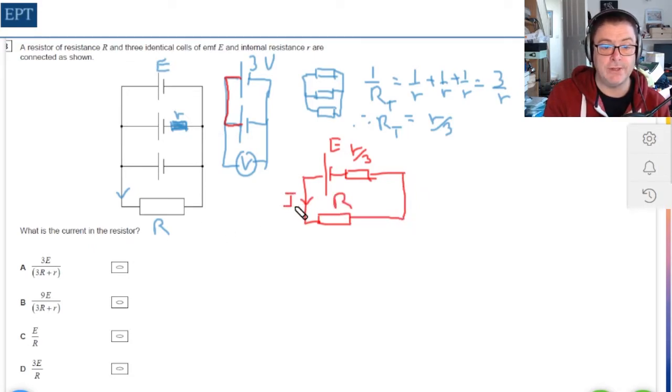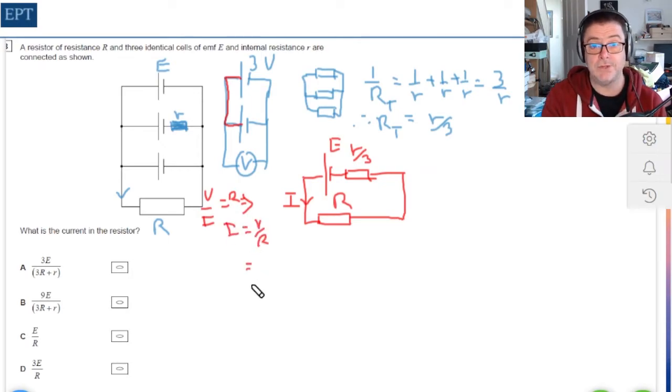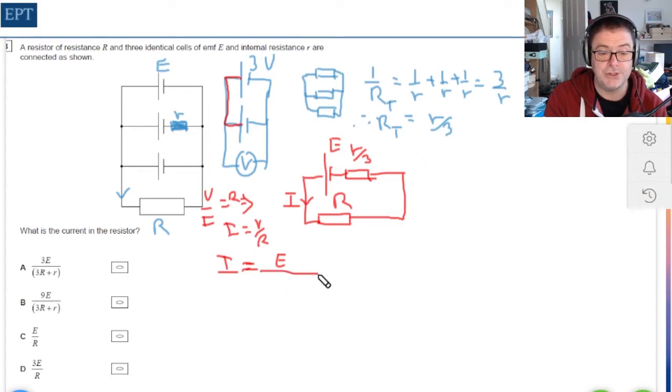In order to get the current in the circuit, it's just a question of reaching for Ohm's law: V over I equals R. So the current is going to be I equals V over R. We know the values now, so let's put them in. The current is going to be equal to E divided by the two resistors added together, because R and r over three are in series. So that's going to be R plus r over three. And you might think, yippee, that's my answer. Only of course, that's not given as one of the possible answers.